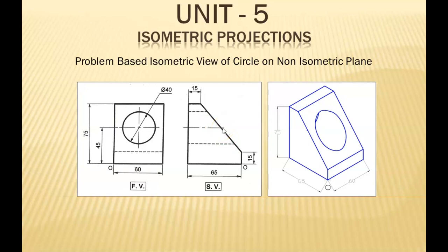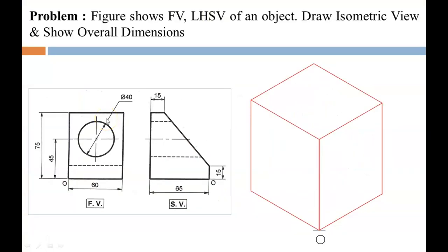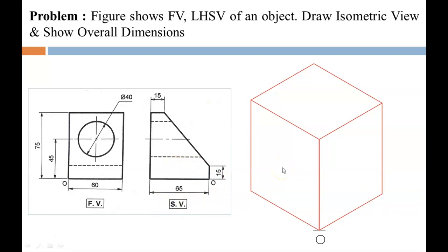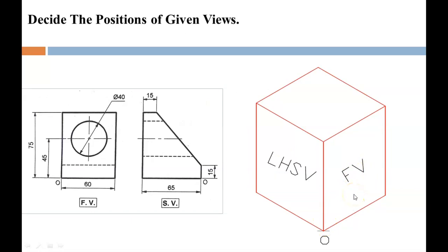We are going to draw the isometric view of this circle on a non-isometric plane. The problem states: the figure shows front view and side view — it is a LHSV — of an object; draw the isometric view and show overall dimensions. Considering this box, we place the two views with respect to the origin. The front view appears on the right of the origin, and the LHSV appears on the left. Now calculate the required dimensions for each plane.